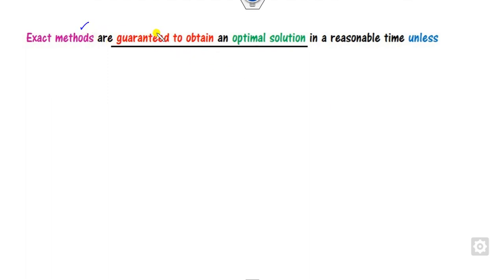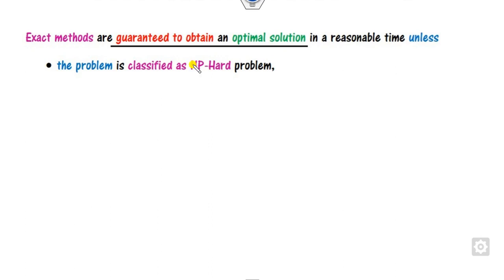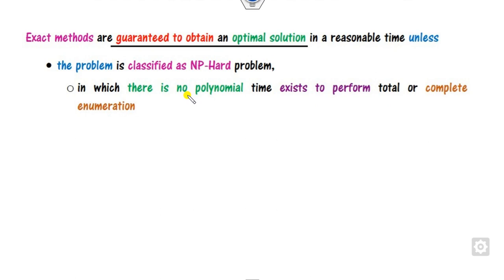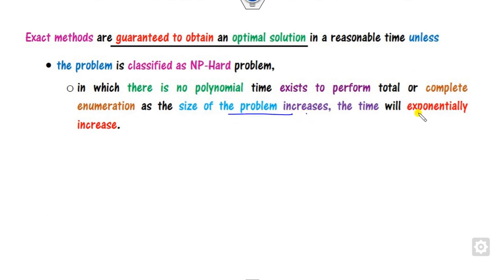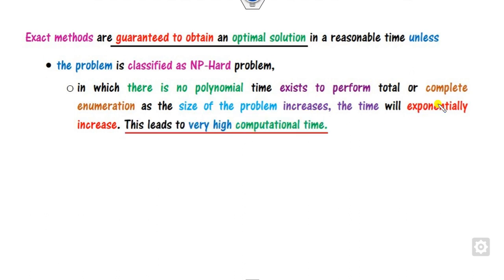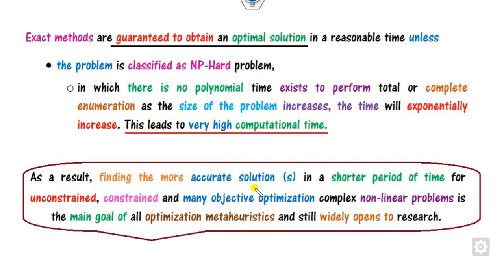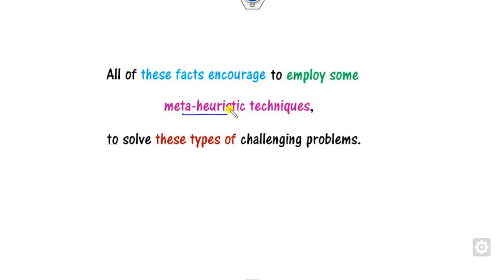Exact methods are guaranteed to obtain the optimal solution only when the problem is classified as polynomial-time solvable. But for NP-hard problems, no polynomial time exists to perform the total calculations, because as the size of the problem increases, the time increases exponentially, which increases computational time. As a result, finding accurate solutions within shorter time periods becomes very difficult. To handle this, there is a need for meta-heuristic techniques.